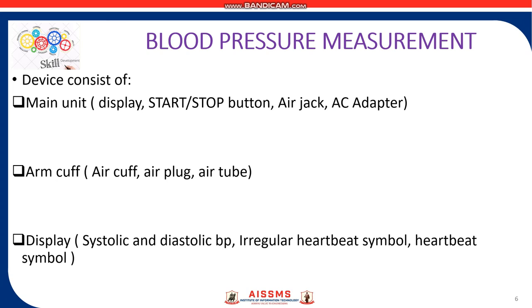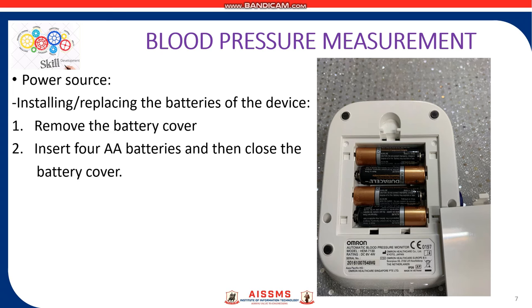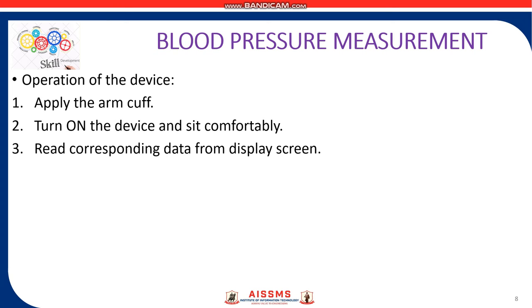The device mainly consists of the main unit, the arm cuff, and the display. This blood pressure monitoring device requires four AA batteries to operate. The operation of the device involves three simple steps: apply the arm cuff, turn on the device, sit comfortably, and read the corresponding data from the display screen.